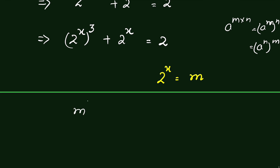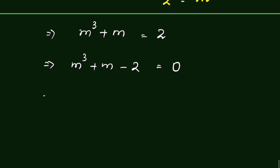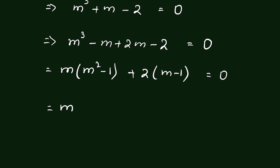In that case we have m³ plus m is equal to 2, or we can write it as m³ plus m minus 2 is equal to 0. We can write m³ plus m as minus m plus 2m, then minus 2 is equal to 0. Now we can take m common and write m squared minus 1, plus 2 common and write m minus 1 is equal to 0.